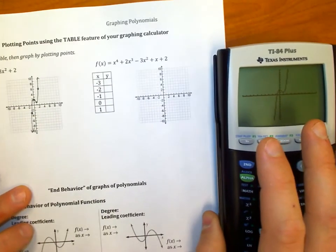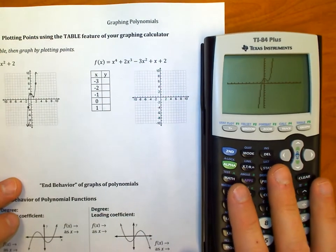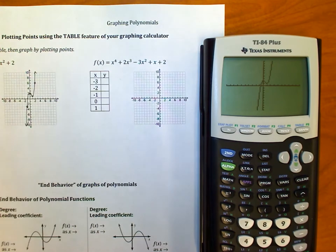So your job is to go through and do the same thing for your notes on this one here, an x to the fourth graph. Okay. And in the next video, this is the first video of today's lesson. In the next video, we'll talk about the bottom where we talk about what's called end behavior of these polynomials.